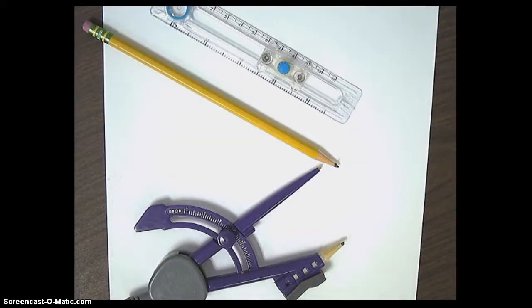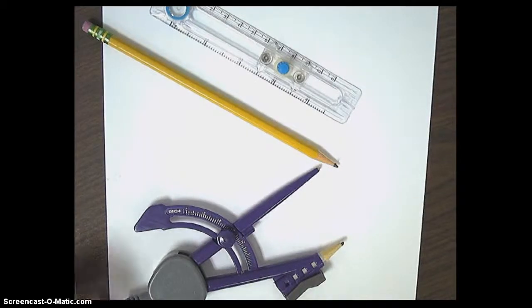What you see in front of you are two types of compasses, plus a pencil and, of course, some white paper. And these are the tools that we're going to be using in class.